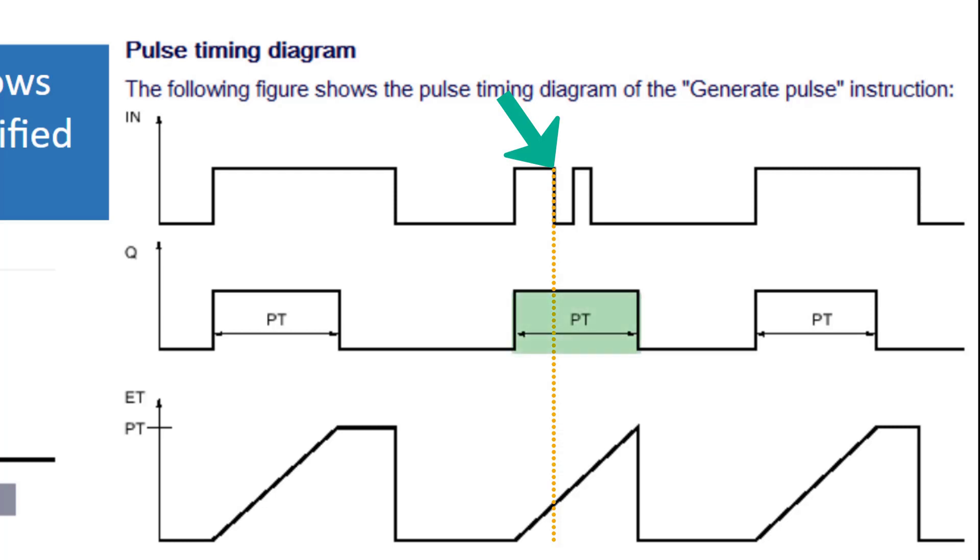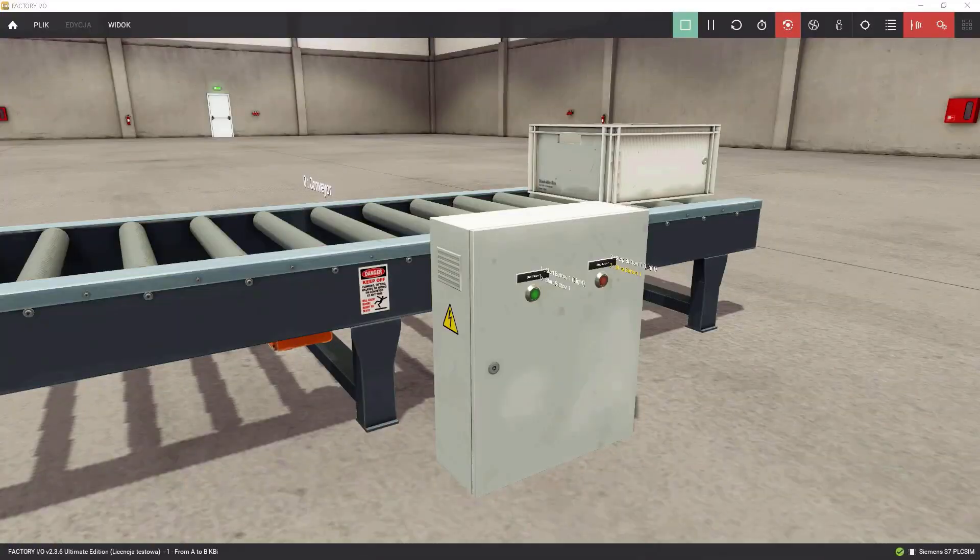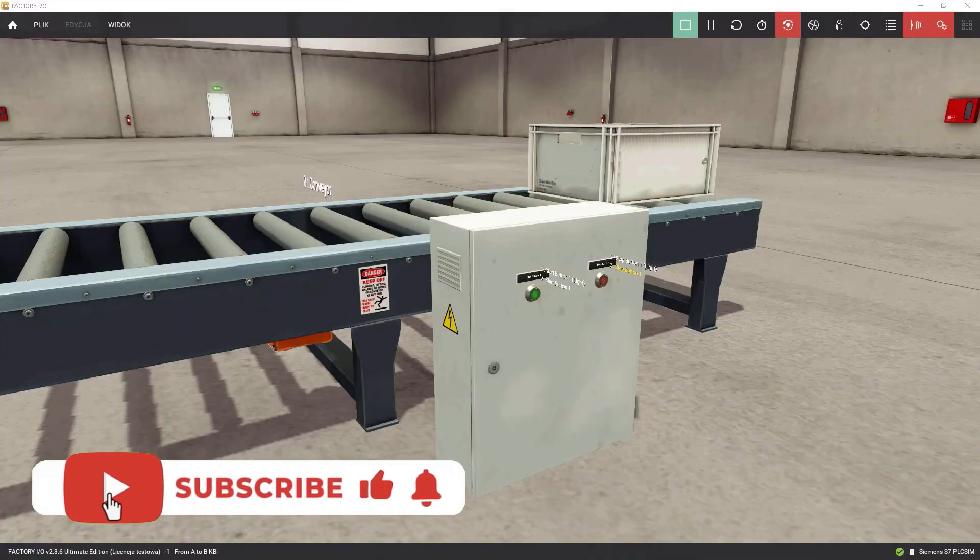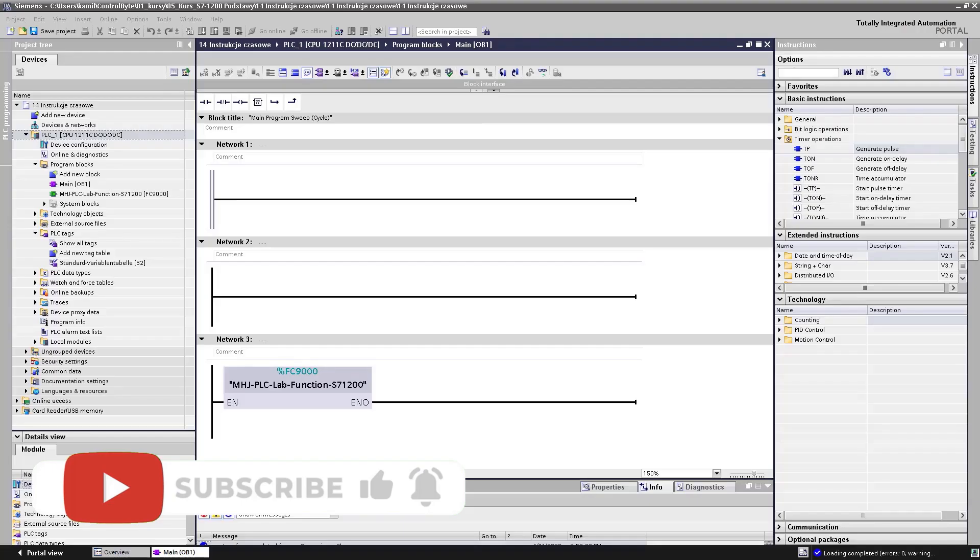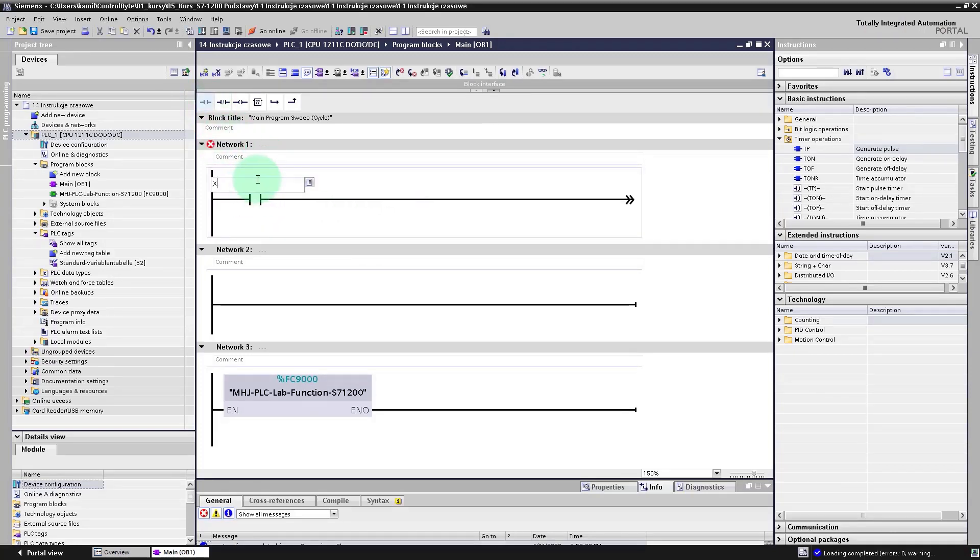I will show you now how to call TP timer in the ladder program. I recommend you to work with me. So download a project template down below the video. The goal of our program will be to write a piece of code that will move the container on the feeder for 4 seconds by pressing a button. Firstly, add a normally open contact to our first network and type here X start and hit enter.